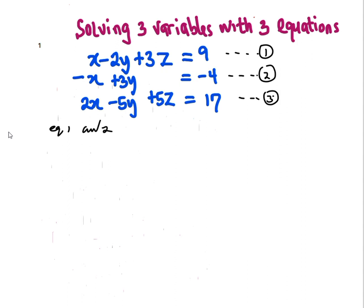Let me just rewrite it. So, I'm having x minus 2y plus 3z equals 9. And also, I'm having negative x plus 3y equals negative 4. Adding these two equations together using the method of elimination.